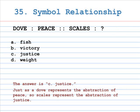Number 35: symbol relationship. Dove is to peace, as Scales is to A. Fish, B. Victory, C. Justice, D. Weight. The correct answer is C, Justice. Just as a dove represents the abstraction of peace, so Scales represent the abstraction of justice.